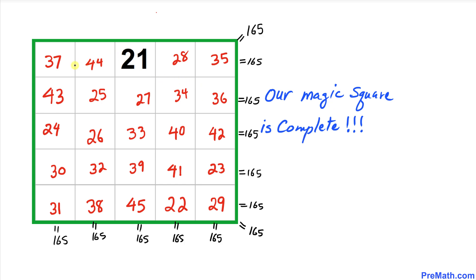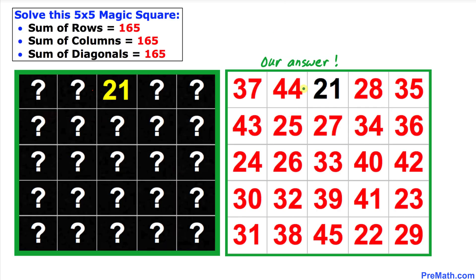We can verify that adding any row, column, or diagonal gives 165. This is our final answer — a complete 5 by 5 magic square whose sum is 165 in every row, column, and diagonal. Thanks for watching, and please don't forget to subscribe to the channel for more exciting videos.